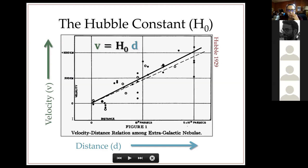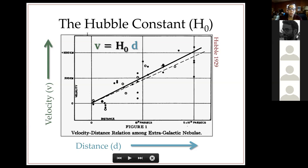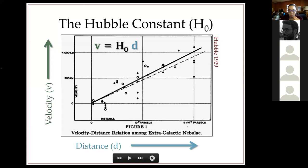The interesting thing about this plot is that distance is on the x-axis and velocity is on the y-axis. In science we typically put the independent variable — what we feel most secure about — on the x-axis. In 1929, Edwin Hubble actually thought he measured distances really well, but the velocities were what he wasn't sure about. The notion of redshift as a cosmological entity just didn't exist, so there was a real debate over what these velocities actually represented.